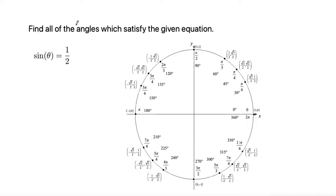This problem says to find all of the angles which satisfy the given equation. Sine of theta is equal to 1 half.